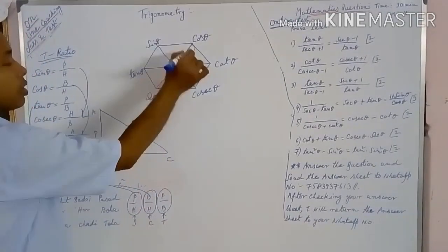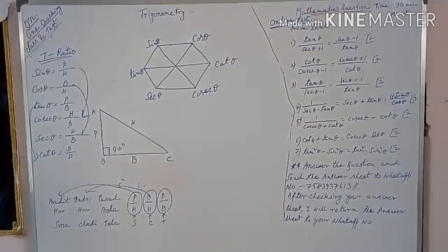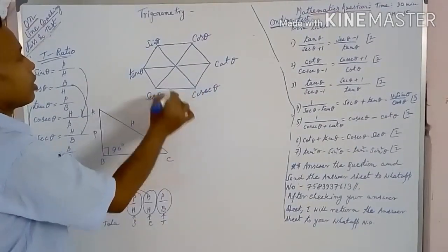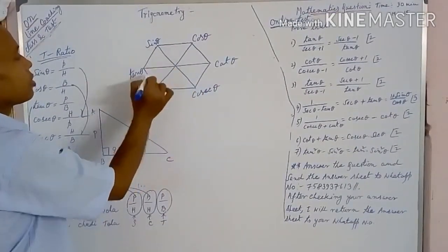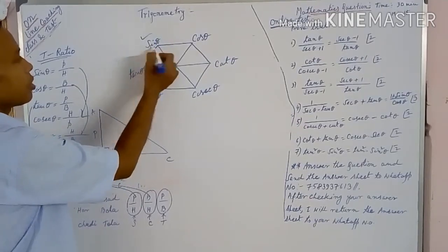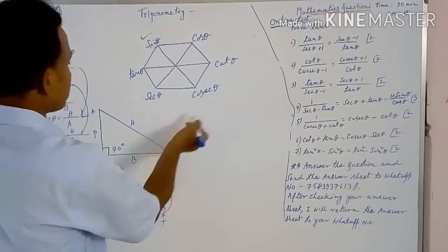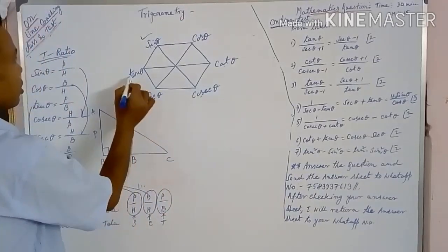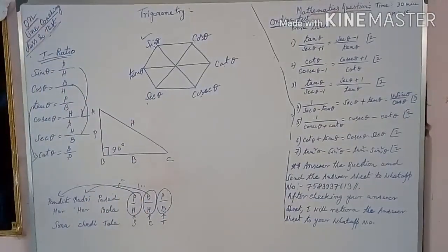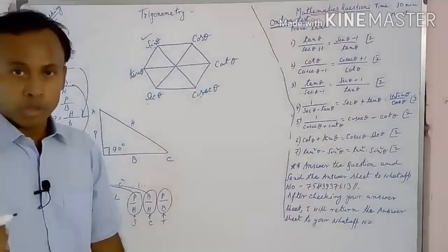First, draw a regular hexagon and join the diagonals. Begin with sin theta here, then cos theta, cot theta, cosec theta, sec theta, and tan theta. Now we will find out the trigonometric formulas.